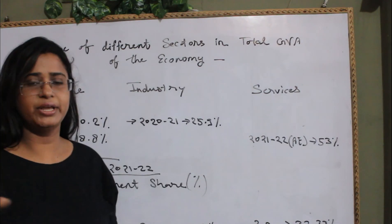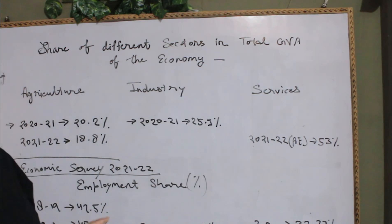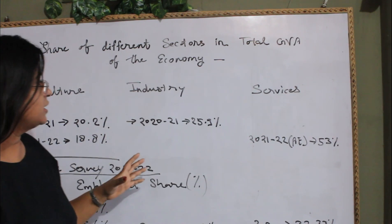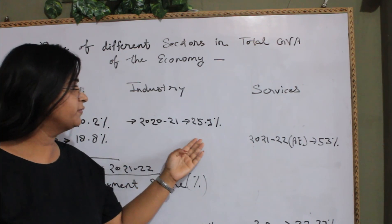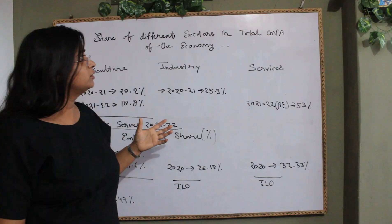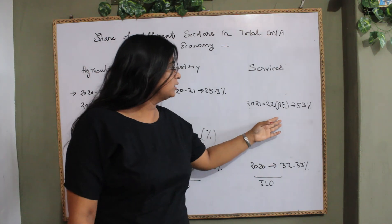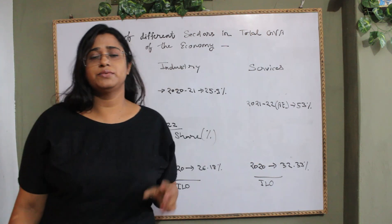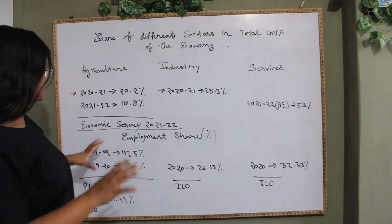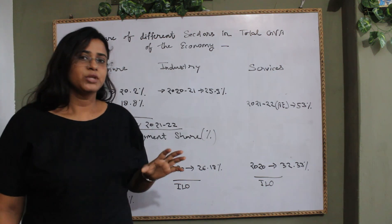It ranged between 14, 15 to 18% in the recent past years. The industrial sector has 25.9% in 2021 in the total GVA of the economy. And apparently, your service sector is having 53% in the GVA. And the data is taken from the Economic Survey 2021-2022.